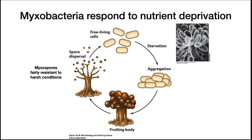Myxobacteria have a social lifestyle. They travel in large populations and secrete antibiotics to kill other bacteria and digestive enzymes to degrade their victims. They respond to nutrient deprivation or desiccation by aggregating together and forming a fruiting body. About 75% of the cells make up the stalk and the other 25% turn into spores. Creating a fruiting body takes extensive cooperation and communication between cells. Myxospores are resistant to desiccation and high temperatures, though not as much as endospores. Spores will be dispersed by the wind and will germinate when nutrient conditions improve. The behavior of this organism is of intense study because it is kind of analogous to a multicellular behavior.